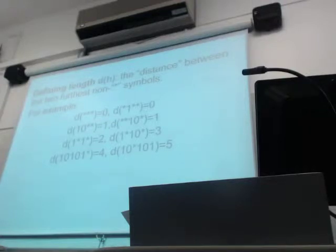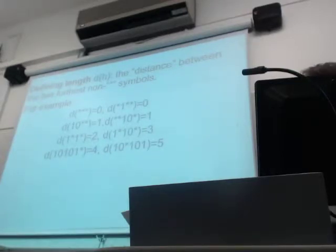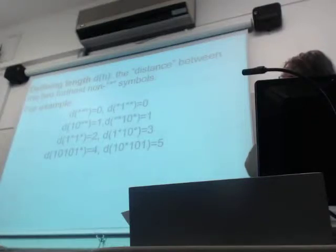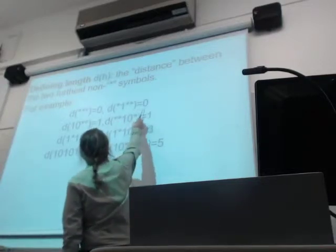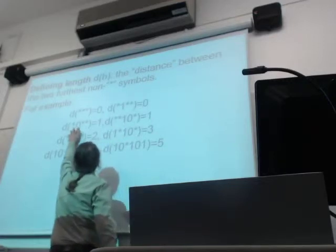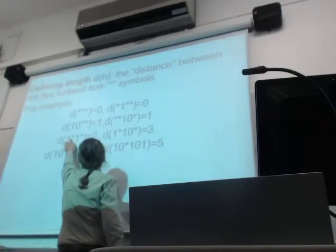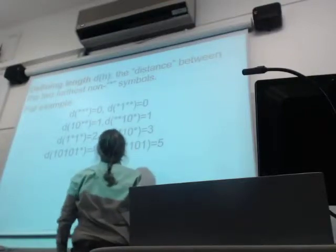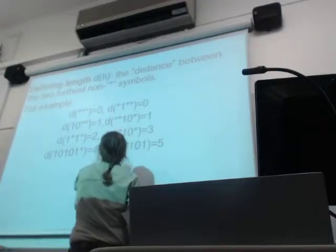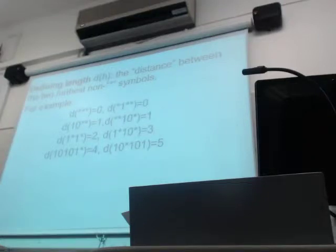The other property Holland considers is the defining length, dh: the distance between the farthest two non-star symbols. If you only have zero or one non-star symbols, the distance is zero or one. With symbols further apart — say 3 apart — that becomes the defining length. So order and defining length are both measures of the size of the schema.